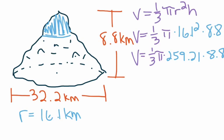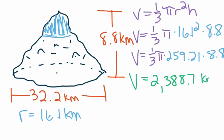Since we only need the approximate volume, we use a calculator and multiply one-third times pi times 259.21 times 8.8 together. When we multiply those four things together, we get V equals 2,388.7 kilometers cubed. So 2,388.7 cubic kilometers is the total approximate volume of Mount Everest.